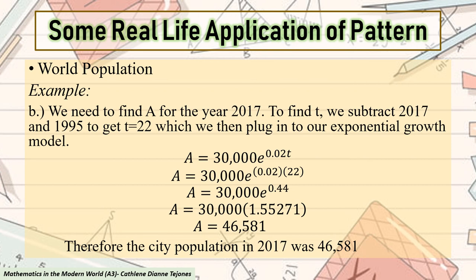Next, let us answer the question on letter B. What is the population in 2017? We need to find A for the year 2017. First, let us find the value of our T. To find T, we subtract 2017 and 1995. Since the initial year is 1995, and the target year is 2017, we should subtract these two. We will have our value of T as 22.